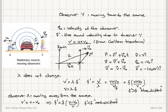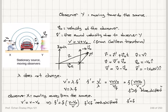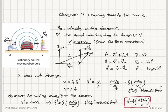Blue shift and red shift are optical terms used for electromagnetic waves, and this terminology is also used when discussing Doppler shifts of light. To summarize: f prime equals f times (v plus or minus v_observer) divided by v — plus when the observer is moving towards the source, minus when moving away.